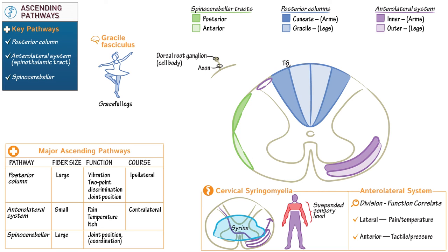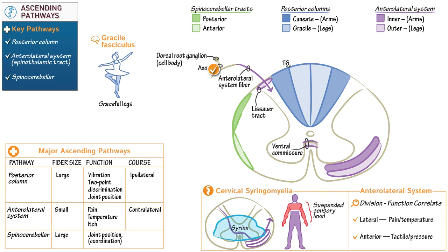Draw Lissauer's tract along the dorsal edge of the dorsal horn, which is the entry zone for anterolateral system fibers. Then label the ventral commissure between the anterior horns of the spinal cord, where anterolateral system fibers cross midline. The central processes of the anterolateral system pass through Lissauer's tract and synapse within the ipsilateral dorsal horn, then cross within the ventral commissure to ascend contralateral to their side of origin.